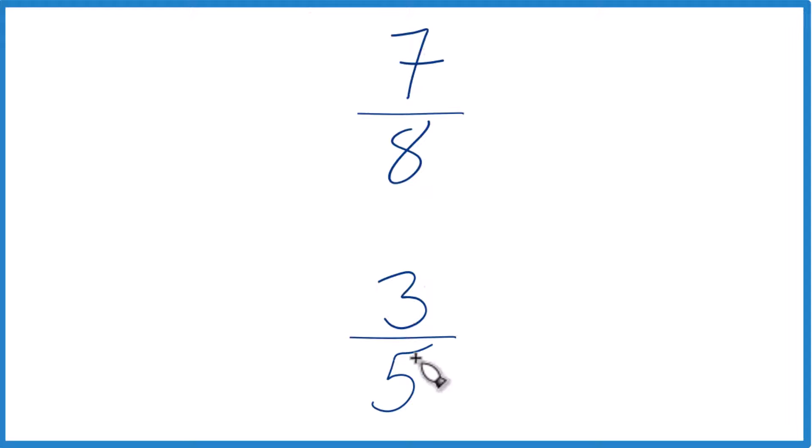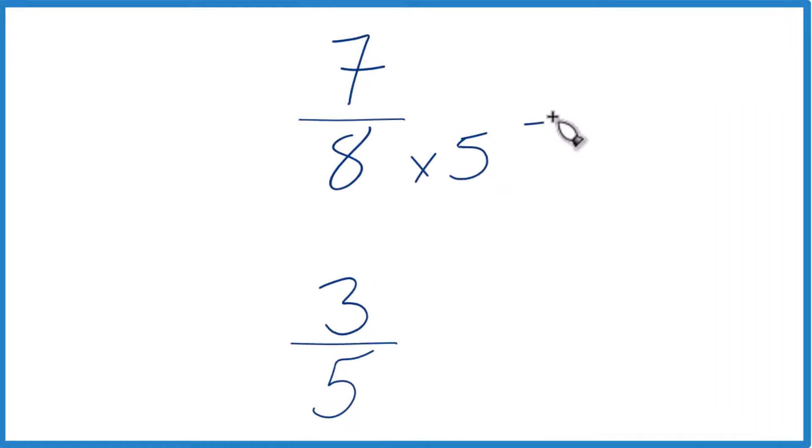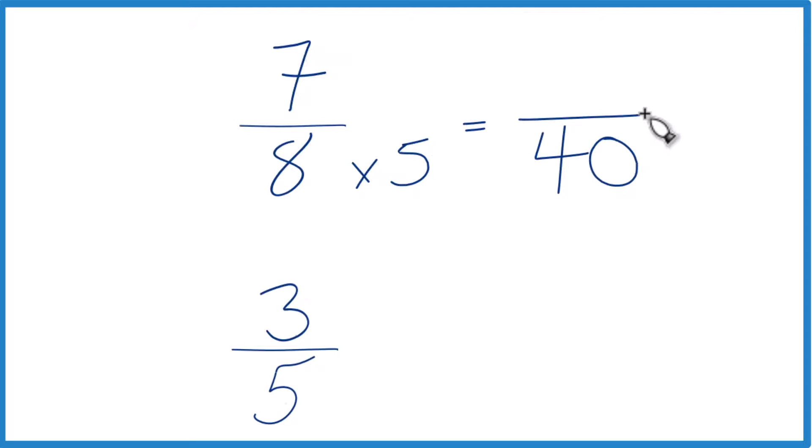Let's say 8 times 5. We do 8 times 5, that gives us 40. Then down here, let's take 5 times 8, because 5 times 8, that gives us 40.